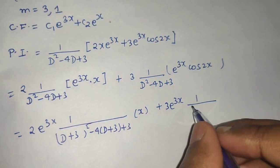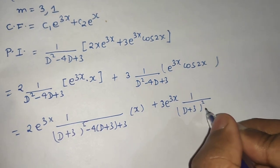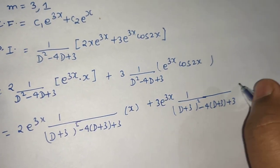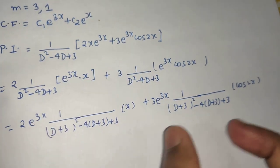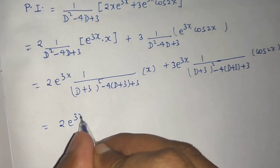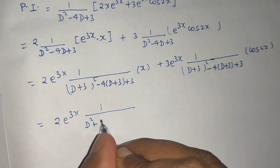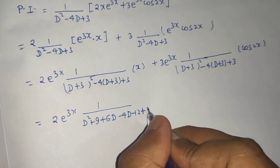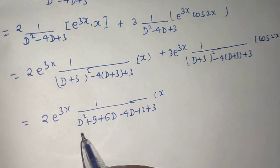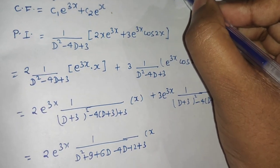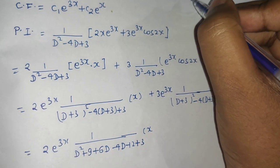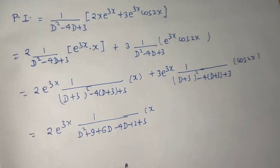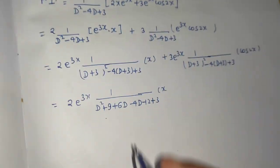And similarly replace D by D+3 in the second term: (D+3)² - 4(D+3) + 3 operating on cos(2x). The calculations in both denominators are the same, so we do it at once. Expanding: D² + 6D + 9 - 4D - 12 + 3 = D² + 2D + 0. So the denominator simplifies to D² + 2D.